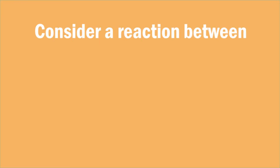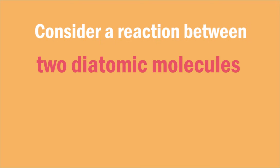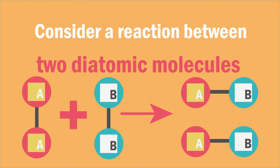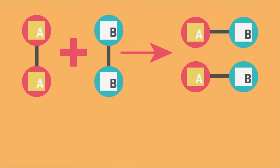Now consider a reaction between two diatomic molecules, AA and BB, to give two molecules of AB. This can be represented by the equation.